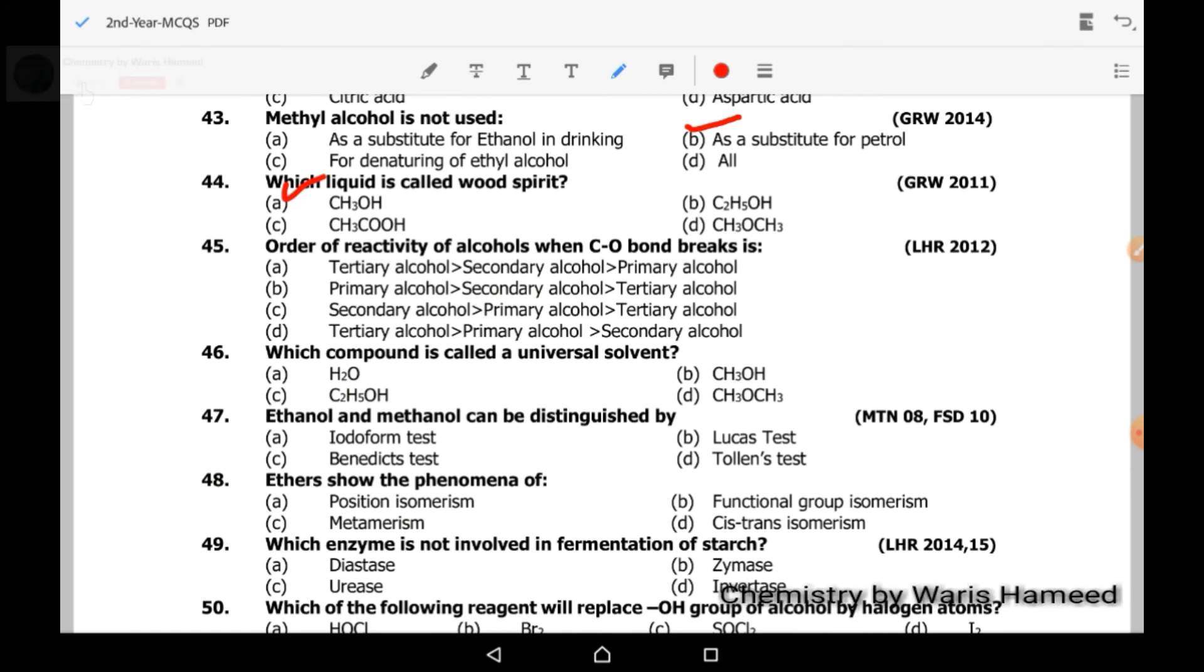Order of reactivity of alcohols when carbon single bond oxygen breaks: tertiary alcohols are more reactive than secondary and secondary alcohols are more reactive than primary. On the basis of oxygen and hydrogen bond, primary alcohol will be more reactive in case of OH bond. Which compound is called universal solvent? It is water molecule. Ethanol and methanol can be distinguished by iodoform test.